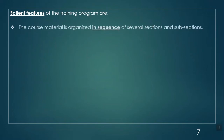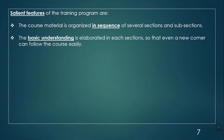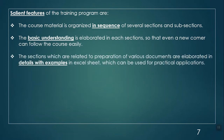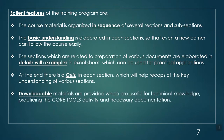The salient features of the training program are: course material organized in a sequence of several sections and subsections as already explained; basic understanding elaborated in each section so that even a newcomer can follow very easily; sections related to document preparation elaborated in detail with examples in Excel sheets that can also be used for practical application; and quizzes at the end of each section to help with recapitulation of key understanding. Downloadable materials are provided useful for technical knowledge and for practicing core tools documentation.